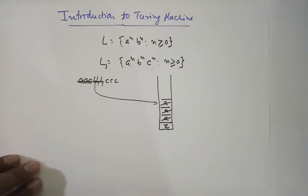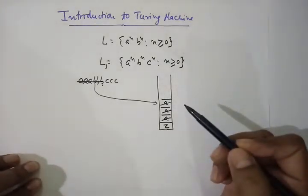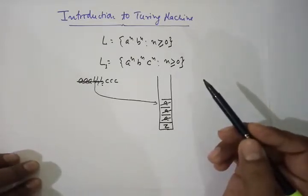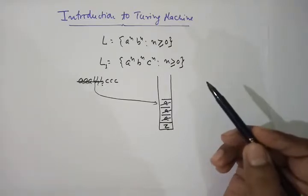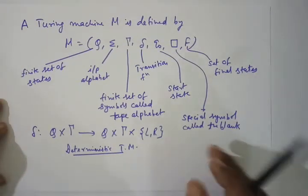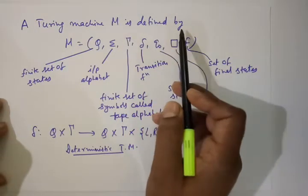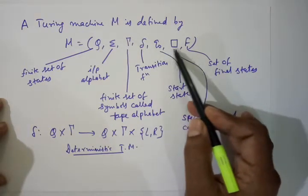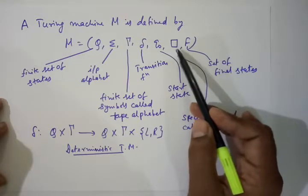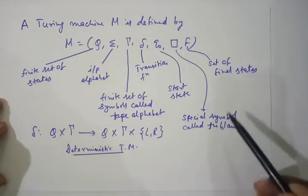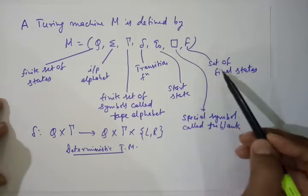So we need a more powerful machine, and that machine is our Turing machine. Now what is a Turing machine? First we give an informal definition. A Turing machine M is defined by M = (Q, Σ, Γ, δ, Q0, □, F). This square symbol □ is new — it was not present in DFA, NFA, or pushdown automata. It is called blank.